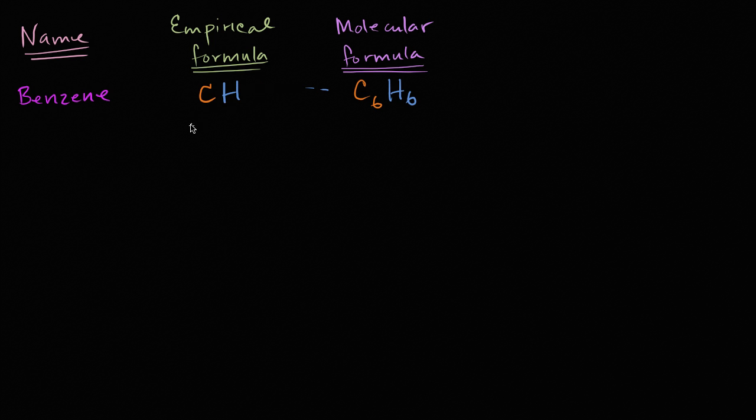If we wanted to, we could write this as C1H1, just like that, to show us that the ratio for every carbon, we have a hydrogen. And we see that that's actually the case in one molecule. For every six carbons, you have six hydrogens, which is still a one to one ratio.